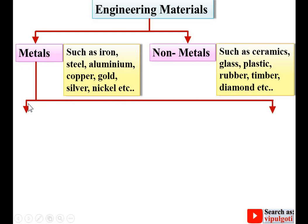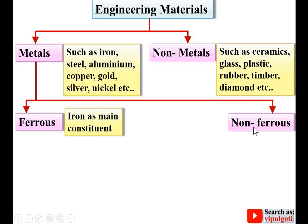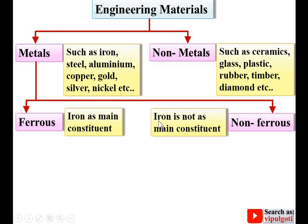Metals are further classified into two different categories: ferrous metals and non-ferrous metals. Ferrous metals have iron as the main constituent, whereas in the case of non-ferrous metals it is exactly the opposite — that means iron is not the main constituent.